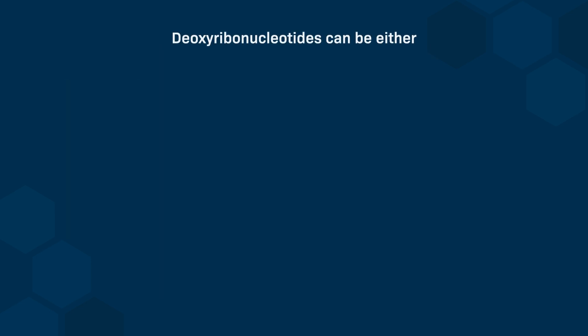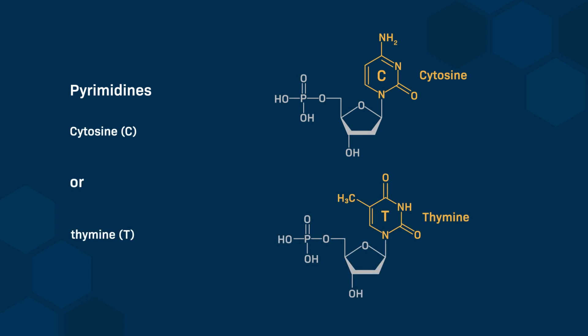The 4 nitrogenous bases can be either pyrimidines or purines. Let's begin by looking at the pyrimidine bases, cytosine and thymine. Remember that in RNA, thymine is replaced by another pyrimidine base, uracil.